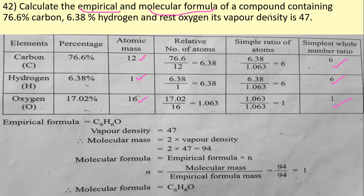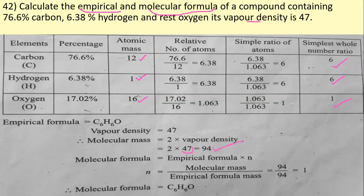Density is simply mass per unit volume. The molecular mass is given by 2 × vapor density. So, molecular mass = 2 × 47 = 94.